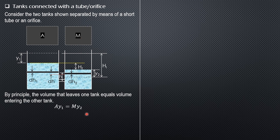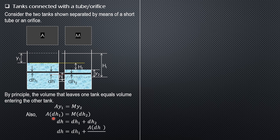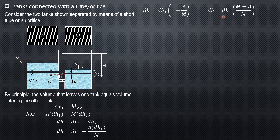From A·dH1 = M·dH2, we get dH2 = A·dH1 / M. Since dH = dH1 + dH2, substituting gives dH = dH1 · (1 + A/M) = dH1 · (M + A)/M. Therefore dH1 = M·dH / (M + A).